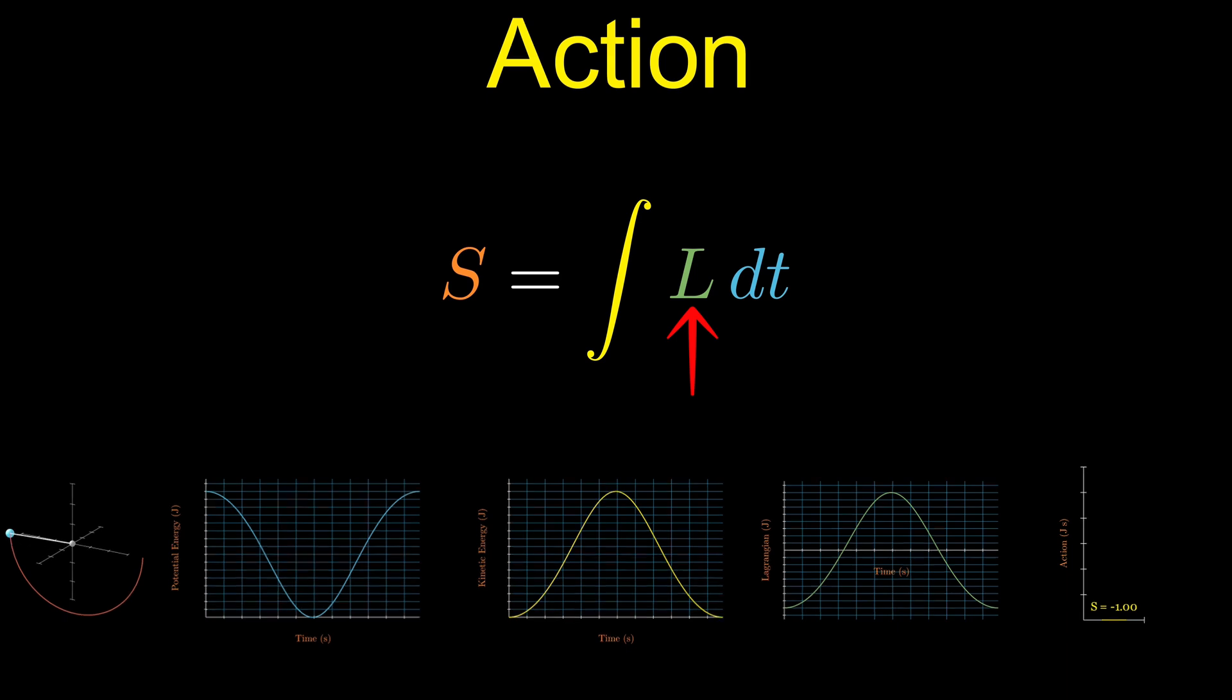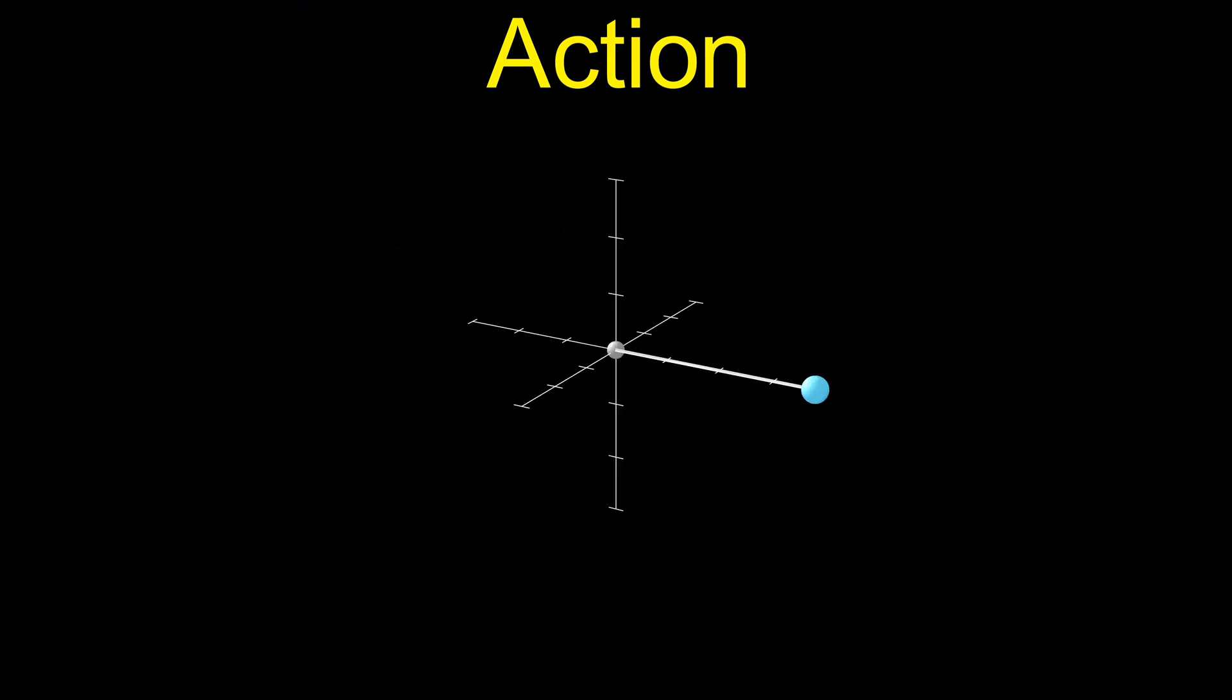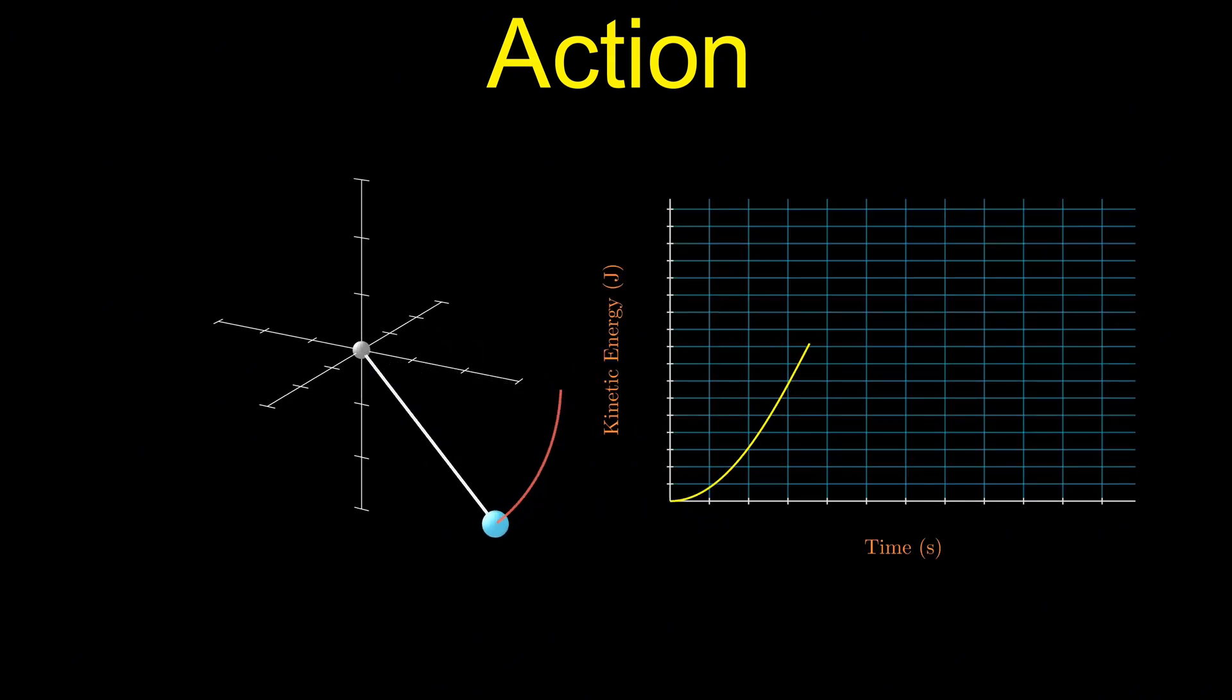The Lagrangian itself is the difference between the kinetic energy and potential energy of the system. Take the example of a simple pendulum. A ball of mass m hanging from a string of length L. As it swings, the ball's kinetic energy comes from its motion. Since the velocity v is related to the angular velocity theta dot, this becomes the relevant equation.